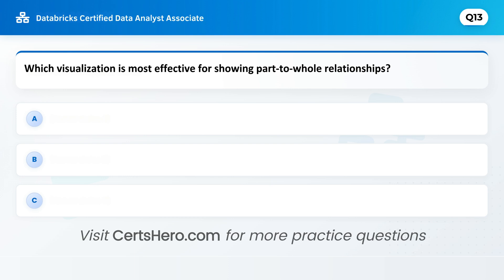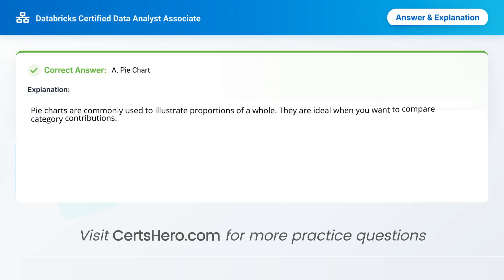This one's a classic visualisation question. Which visualisation is most effective for showing part-to-whole relationships? A. Pie chart. B. Histogram. C. Scatter plot. Correct answer is A: Pie chart. Pie charts are commonly used to illustrate proportions of a whole. They are ideal when you want to compare category contributions.